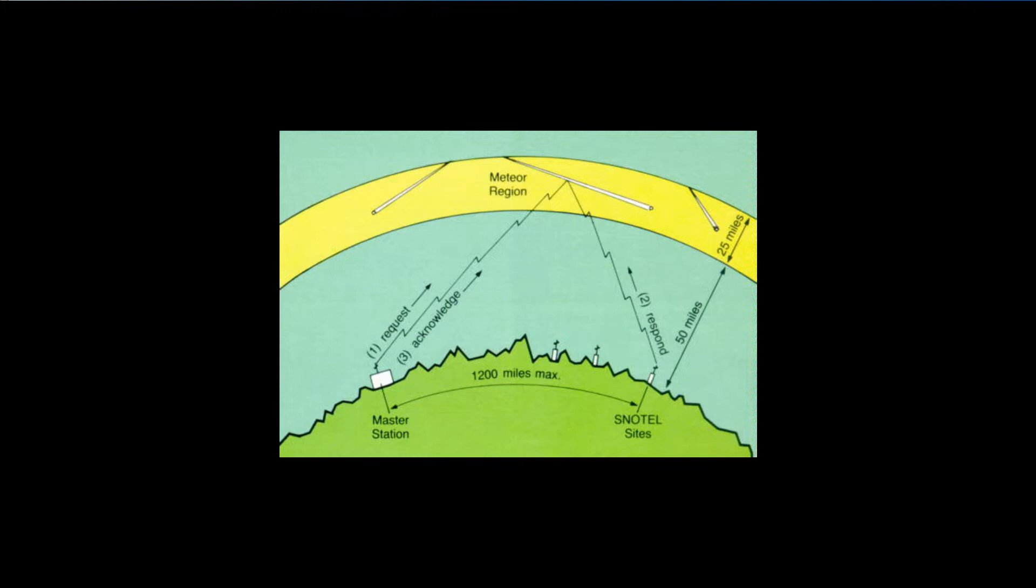When meteors actually enter the atmosphere, they will most of the time, depending on the size of the meteor, create a trail of ionization. So a frequency that propagates at 6 meters, for example 50 megahertz, which is usually line of sight, might suddenly...